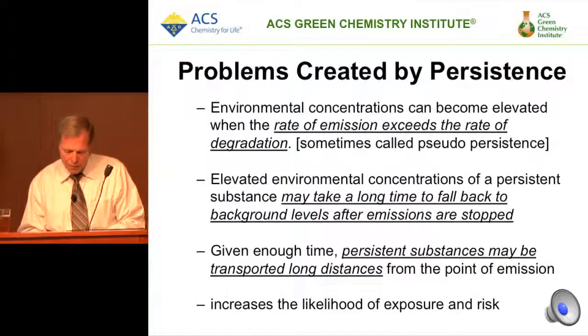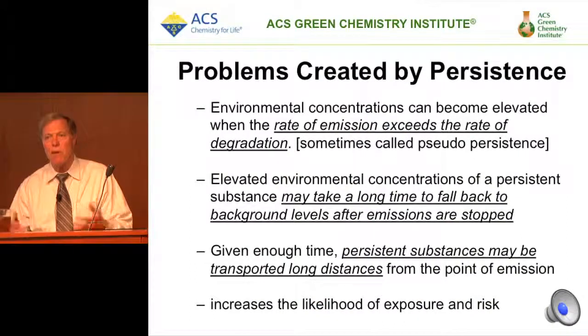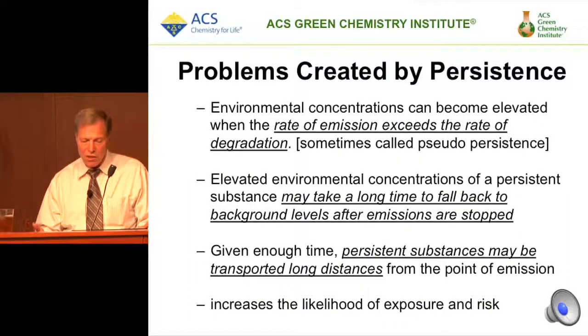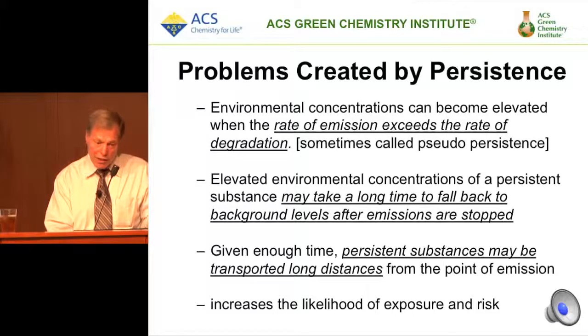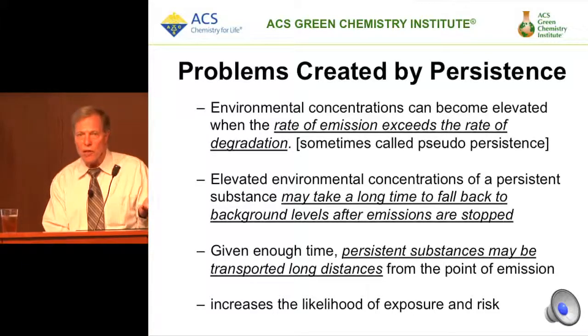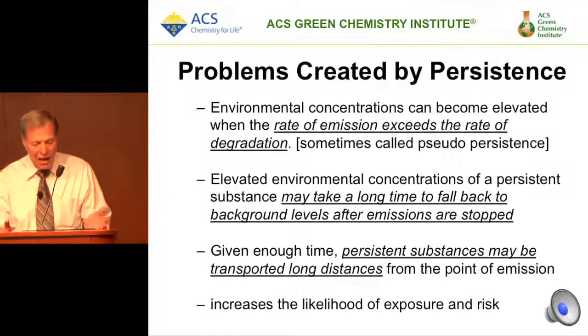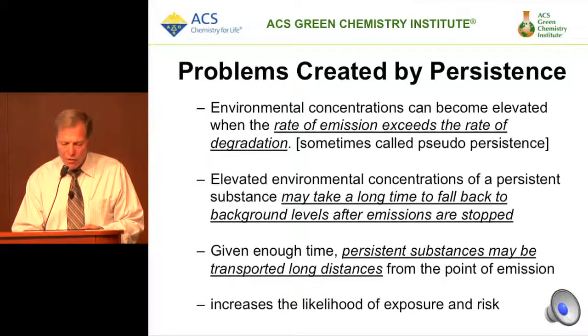Persistence happens and it creates problems. The rate of emission can exceed the rate of degradation — it may take a long time for a compound that was only used a short period of time, such as DDT in this part of the world, to fall back to background levels. And persistent substances can be transported for long distances. You hear about Arctic animals, for example, having detectable levels of various persistent compounds.